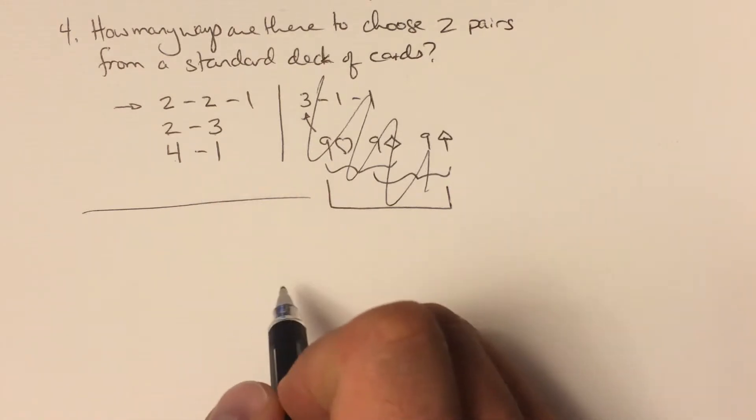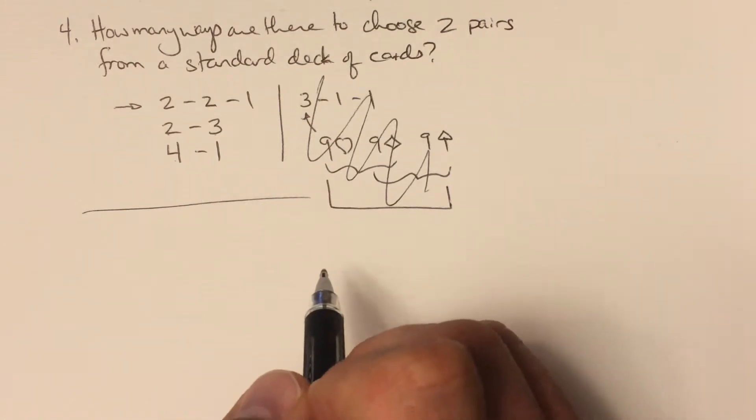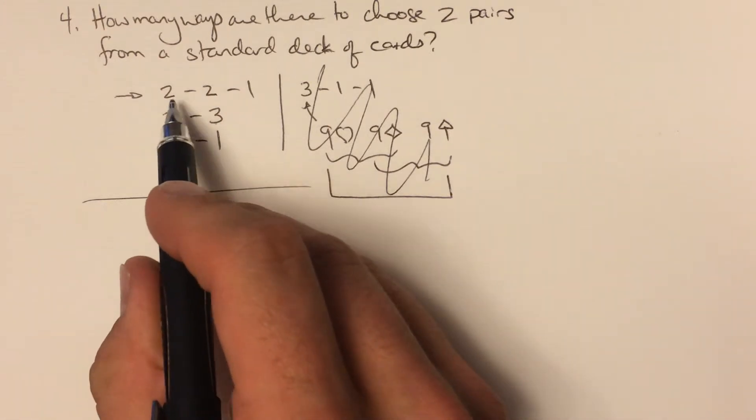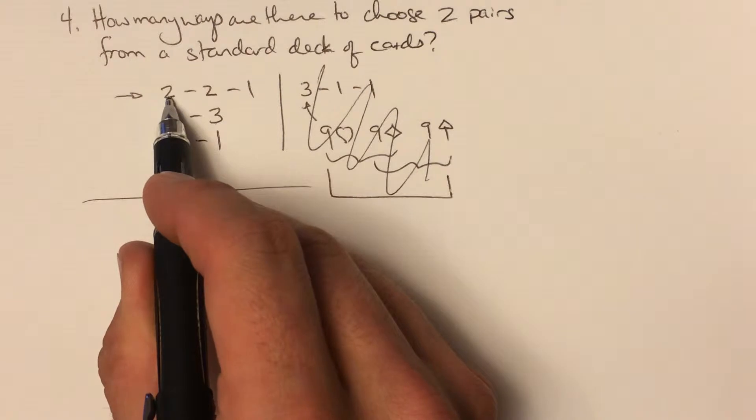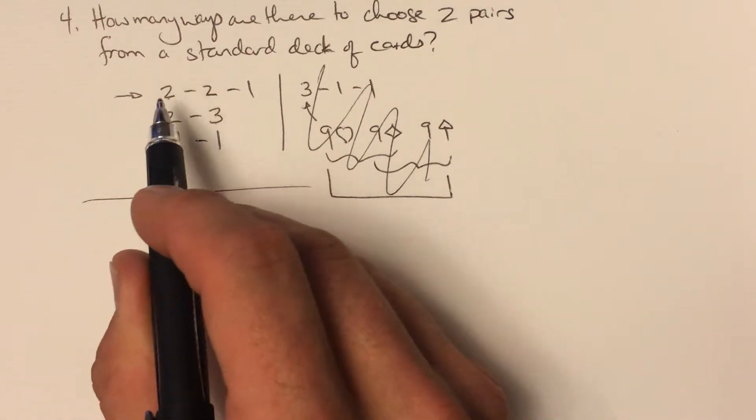We're going to write as a permutation and then turn it into a combination with some division. Let's start by selecting a card to be part of our first pair.